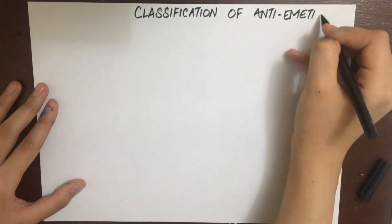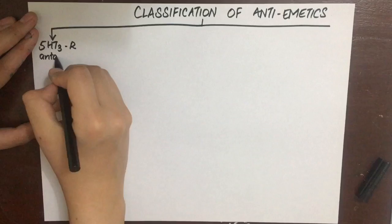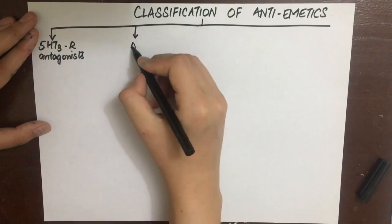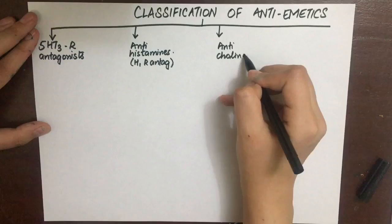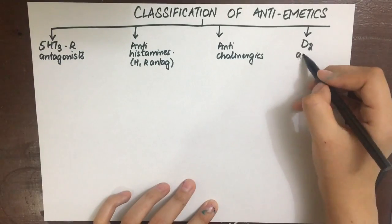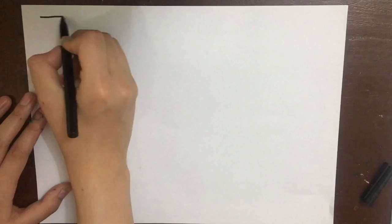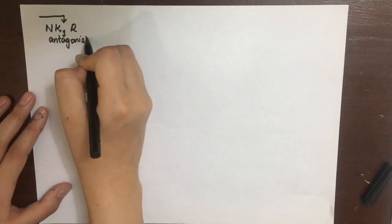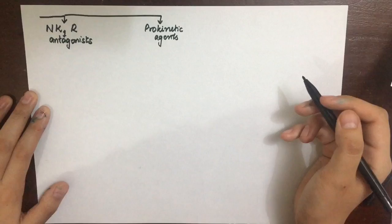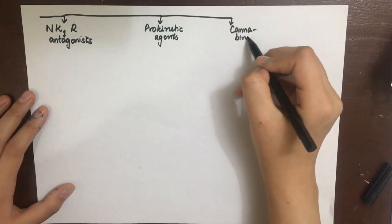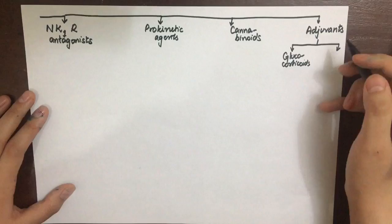Now let's classify the antiemetics. There are basically eight classes we will discuss here: number one is 5-HT3 receptor antagonists, second antihistamines or H1 antagonists, third anticholinergics, fourth D2 antagonists also known as antipsychotics or neuroleptics that are used in schizophrenia, fifth NK1 receptor antagonists, sixth prokinetic agents, seventh cannabinoids, and some adjuvants that are glucocorticoids and benzodiazepines.